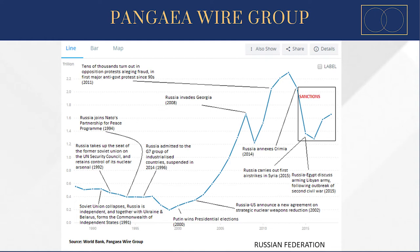Putin won the presidential elections in the 2000s, which led to an almost unbroken set of events where their power grows and develops accordingly. At the peak of their power, they invaded Georgia in 2008. The financial crash happened, but their power didn't really recede. The annexation of Crimea in 2014 saw a decline in their economy, but not the decline of their power. Then came foreign interventions in Syria and Libya in modern times.